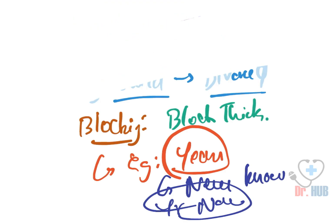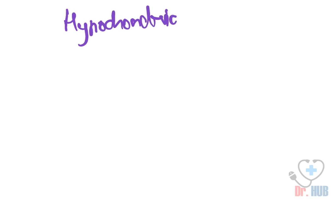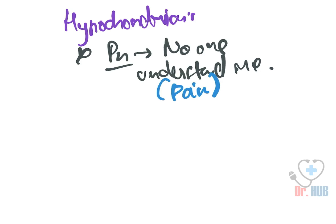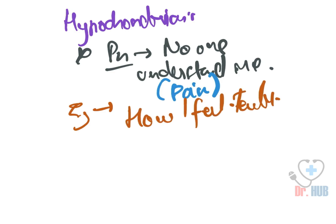Next we look at hypochondriasis. Hypochondriasis is a different style in which people say that no one understands their pain. The person says 'no one understands me.' An example is a person saying 'nobody understands how I feel; I am feeling terrible.'